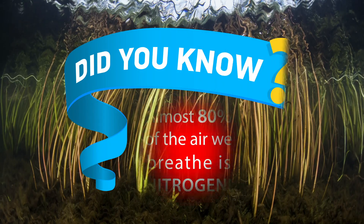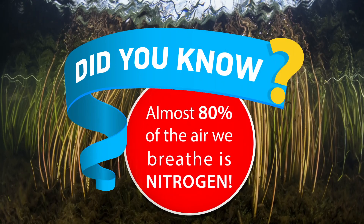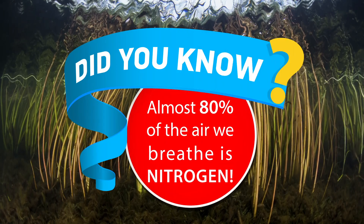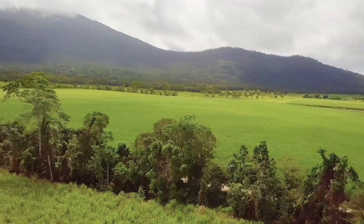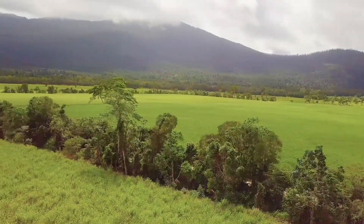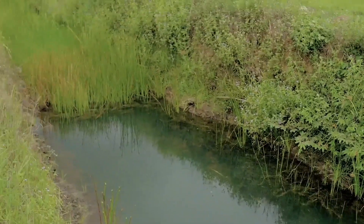Did you know that almost 80% of the air we breathe is nitrogen? My name is Fernanda. I'm a wetland ecologist from Griffith University. A wetland is defined as a site that is waterlogged — it has water most of the time and has vegetation adapted to live in those conditions. So if you think of a drain that has water most of the year and has vegetation on it, that's basically what you would describe as a man-made wetland.